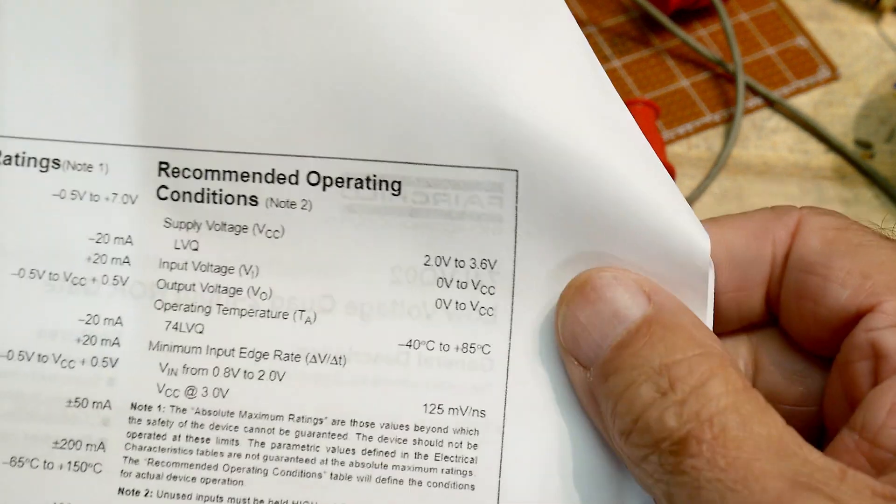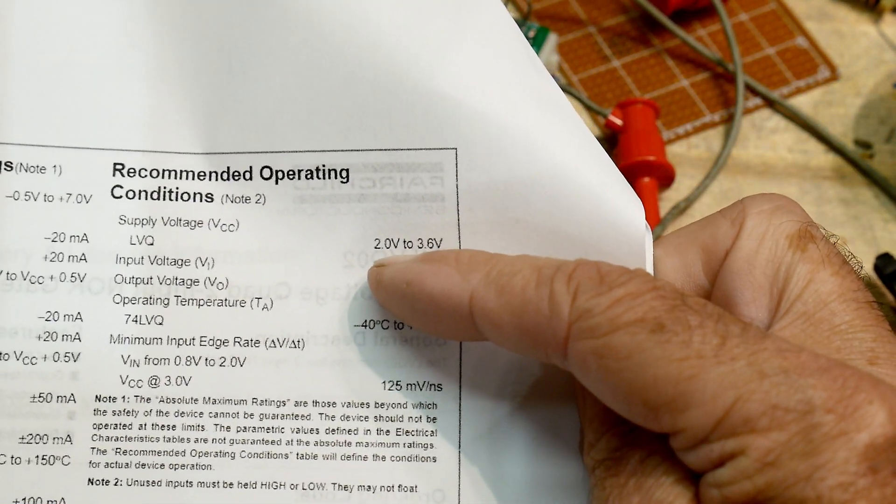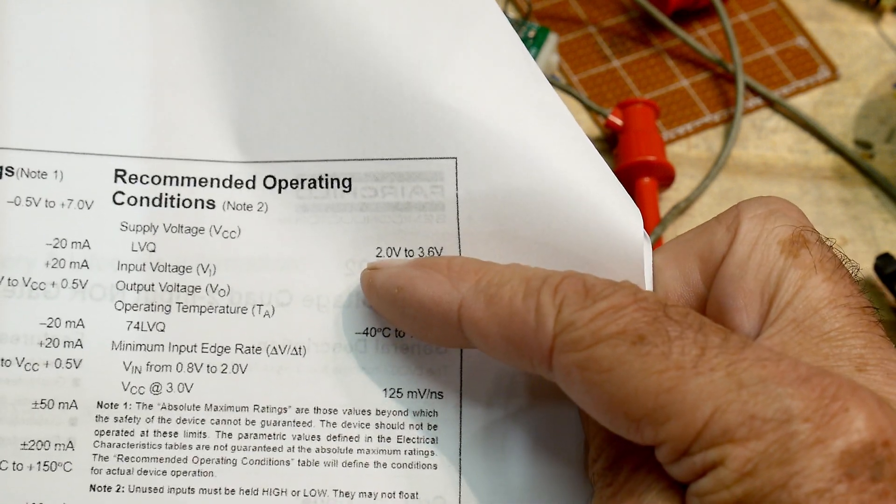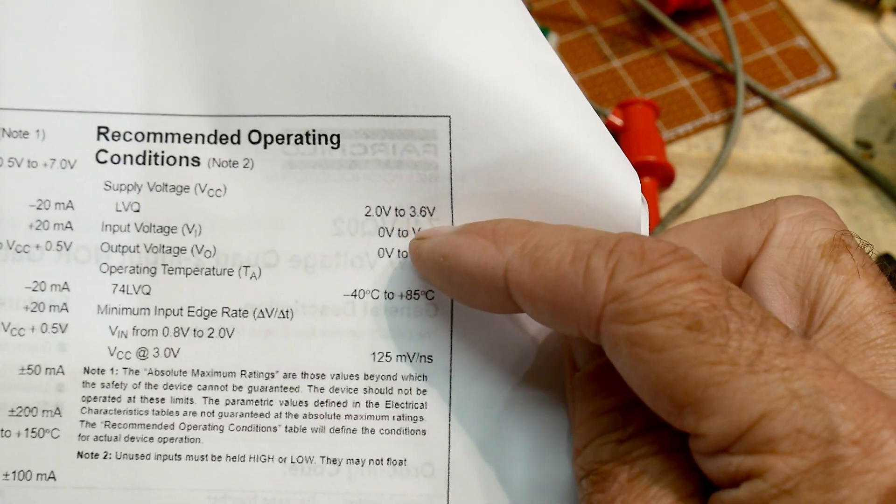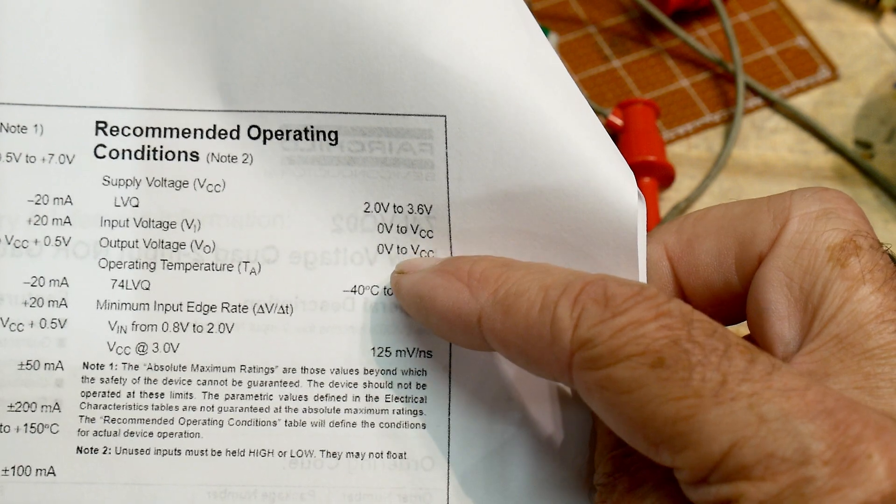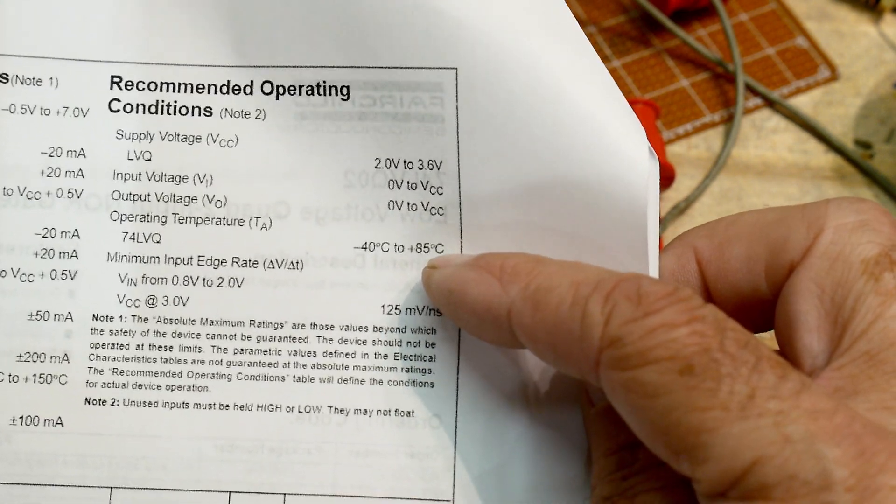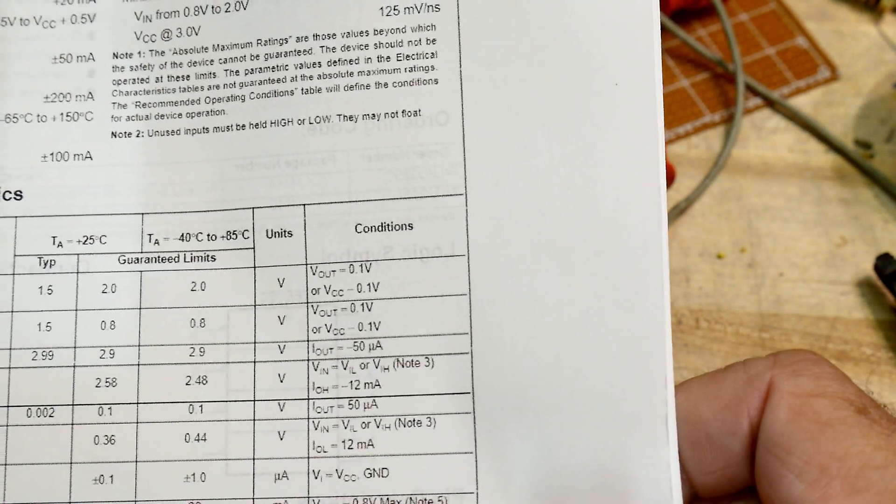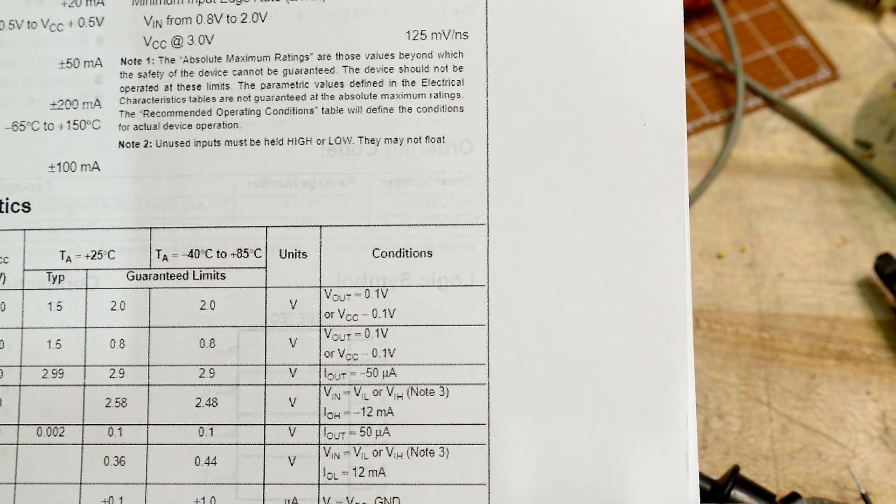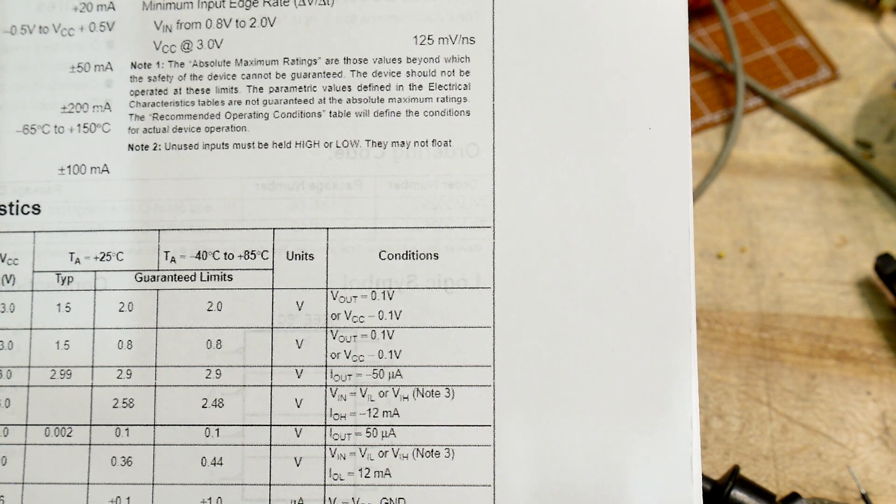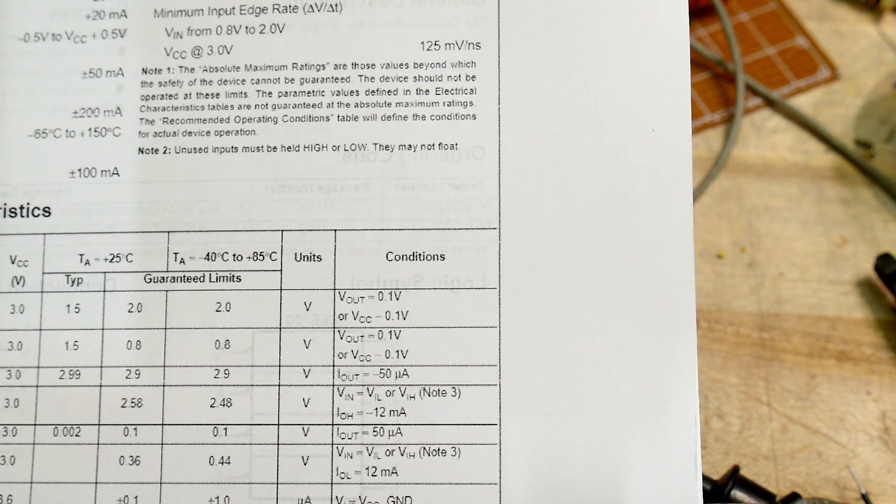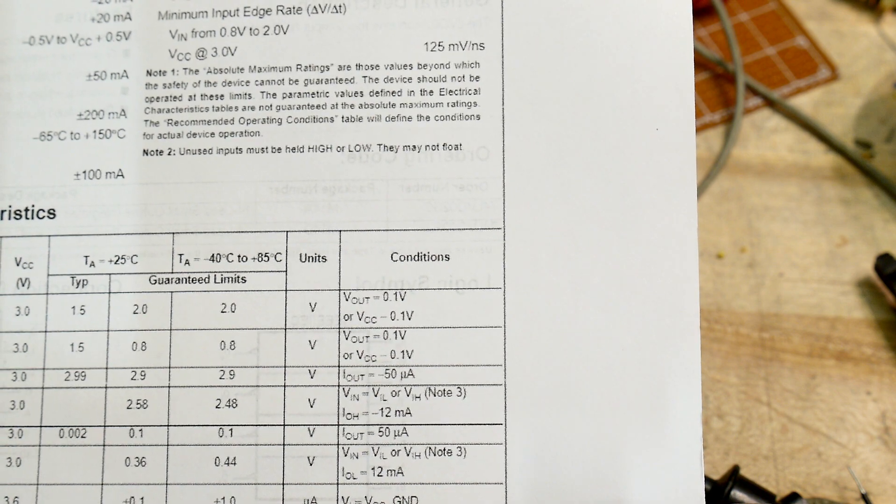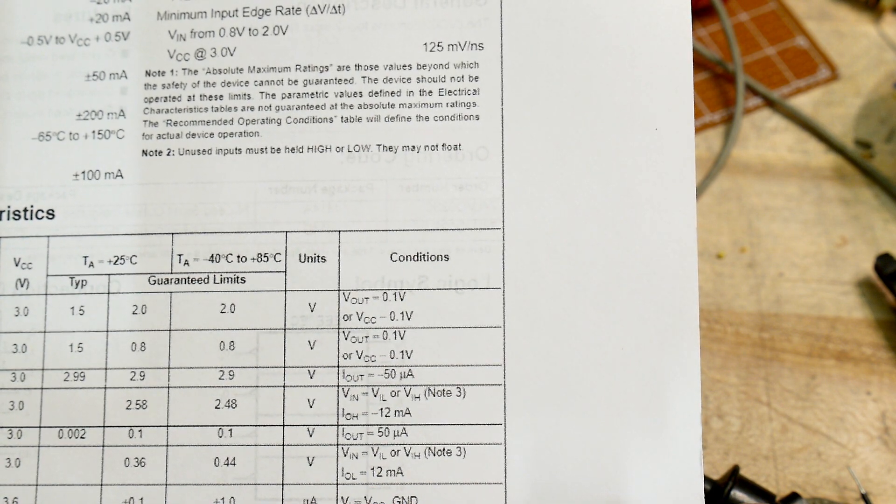Recommended operating conditions: VCC is 2 volts to 3.6, wow. 2 volts. Input voltage is the same, output voltage is the same. Nice temperature range.